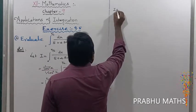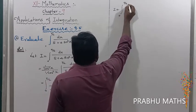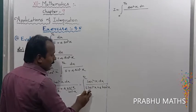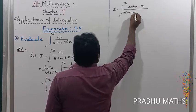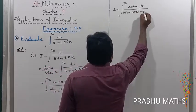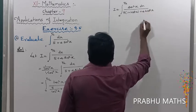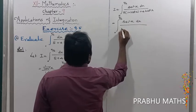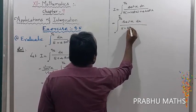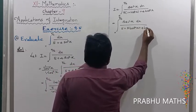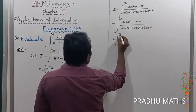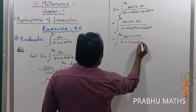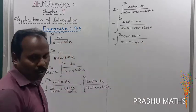Now, replace sec²x with 1 plus tan²x. So the integral becomes 0 to pi/2 of sec²x dx divided by 5(1 + tan²x) plus 4 tan²x, which gives 5 plus 5 tan²x plus 4 tan²x, equals 5 plus 9 tan²x. Now apply the substitution formula.